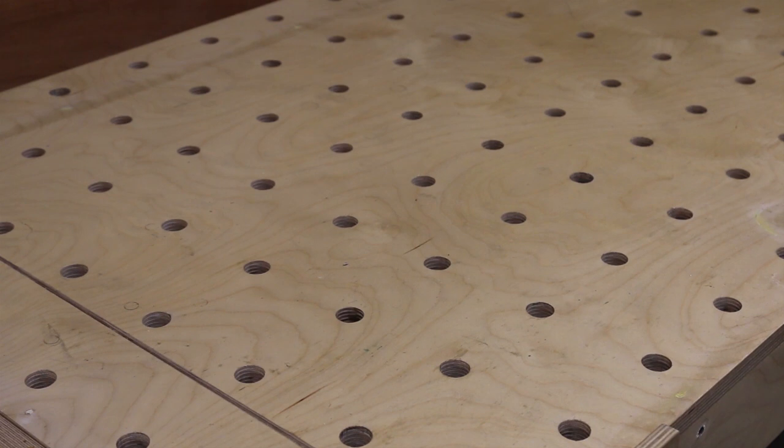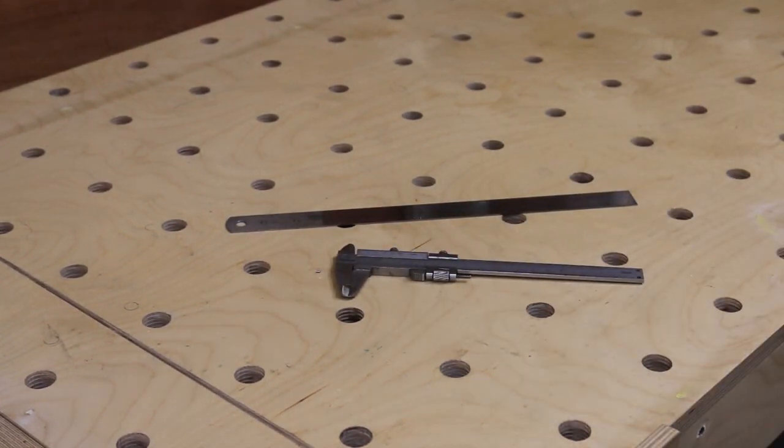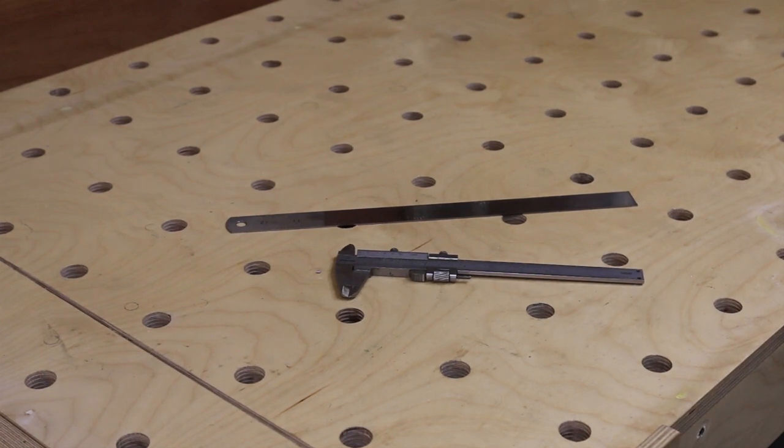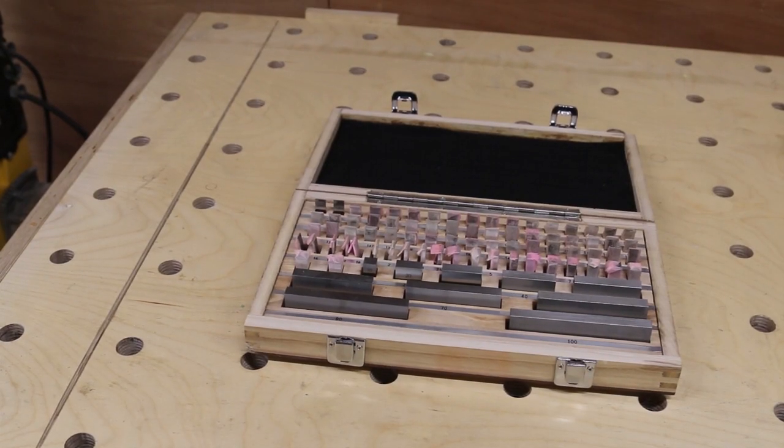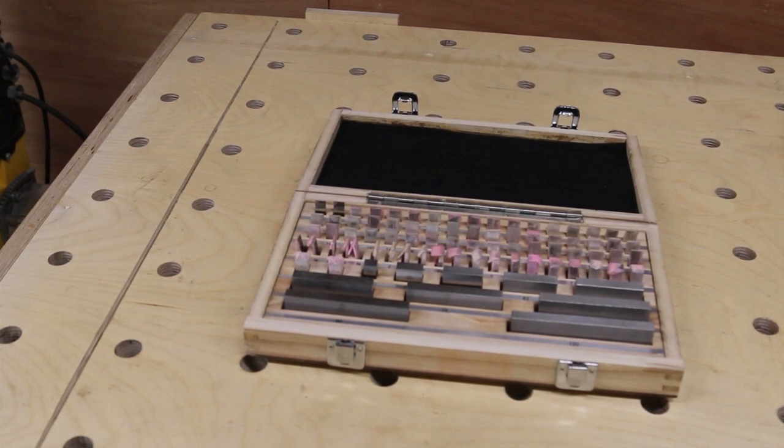To do this I'm not going to use something as crude as a ruler or even a vernier. Instead I'll be using these, Johansson gauges. These are stupidly accurate. The most accurate thing I am ever going to own.